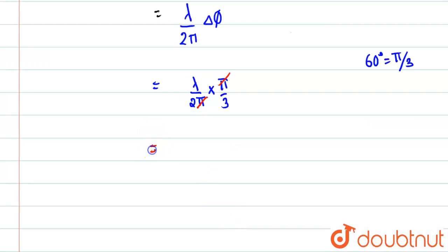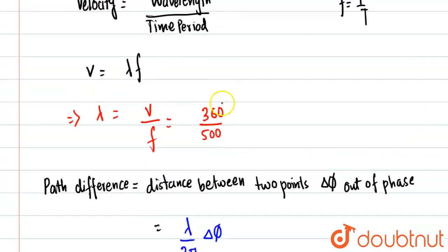And now we'll put the value of wavelength. So wavelength value was 360 divided by 500. So if we simplify it, we will get a value of 36/50.